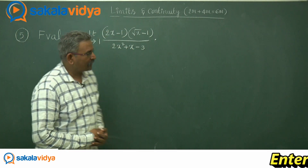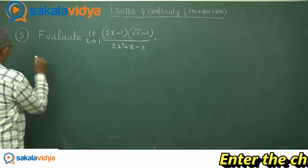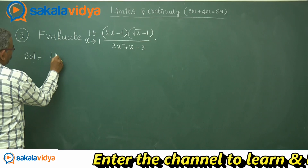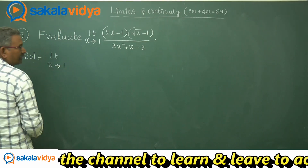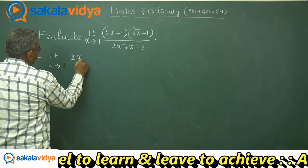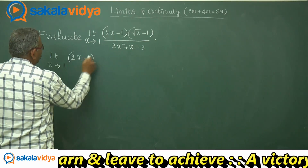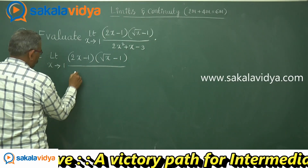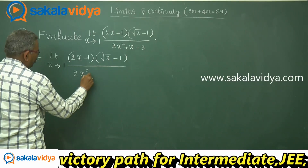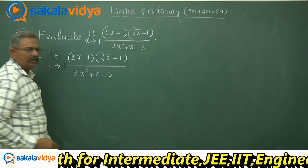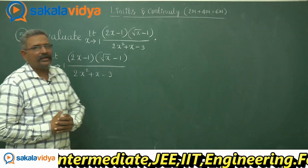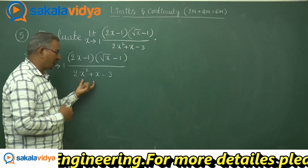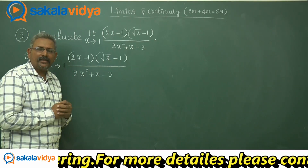Let us solve one more problem. The limit x tends to 1 of (2x minus 1)(√x minus 1) upon (2x² plus x minus 3). Regarding this problem, it will be in the form of 0 by 0 if you substitute the limit. That means we need to find out the factorization of the denominator.